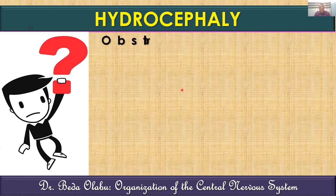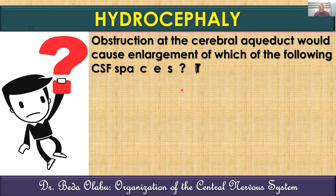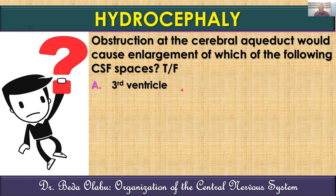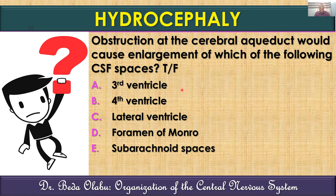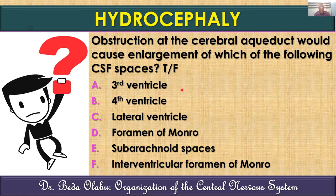Here is a question: if there is obstruction at the level of the cerebral aqueduct of Sylvius, which CSF spaces will be enlarged? Will the third ventricle be enlarged? The fourth ventricle? The lateral ventricles? The foramen of Monro? The subarachnoid spaces? Take time to think through that.